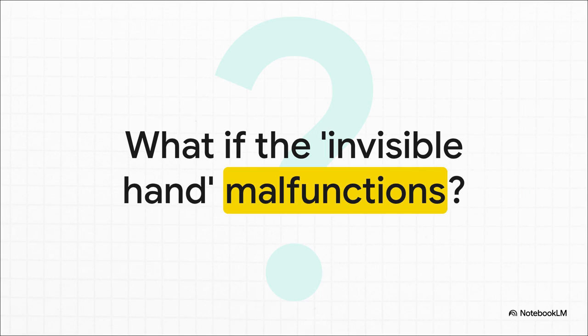We've all heard about Adam Smith's invisible hand — this beautiful idea that the market, left to its own devices, just sorts everything out for the best. But what happens when that hand isn't so steady? What if it fumbles or just completely malfunctions? Well, that's exactly what market failure is all about.